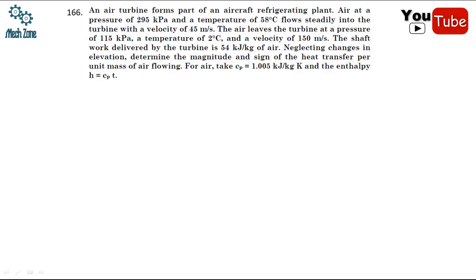Let us start with the first problem of this day. We have been given that an air turbine forms a part of the aircraft refrigeration plant. Air at a pressure of 295 kilo Pascal and temperature of 58 degree centigrade flows steadily through the turbine with a velocity of 45 meters per second. The air leaves the turbine with a pressure of 115 kilo Pascal, temperature of 2 degree centigrade, and velocity of 150 meters per second.